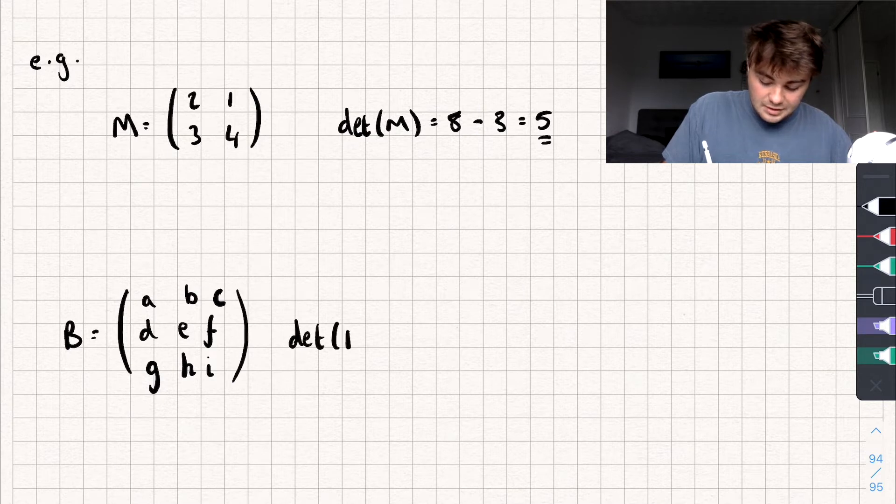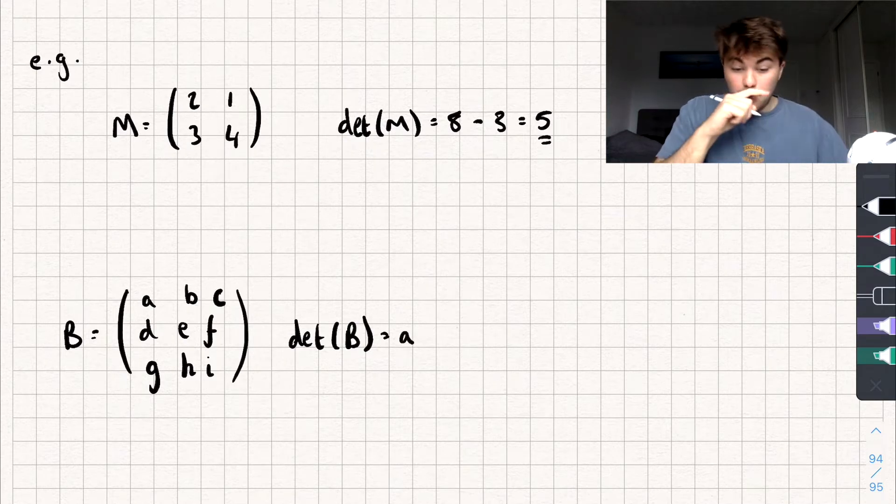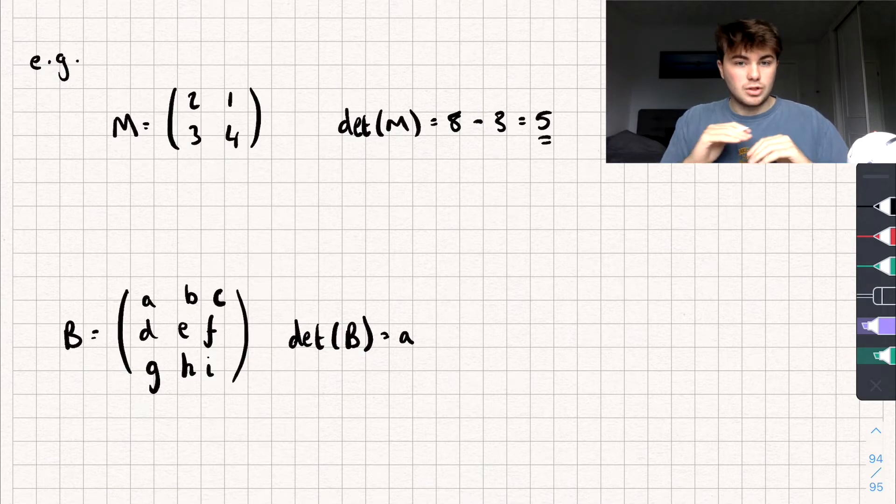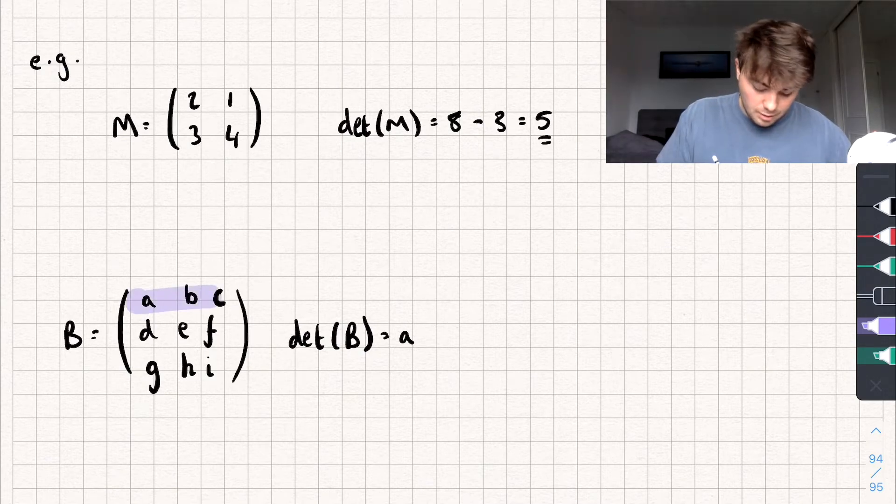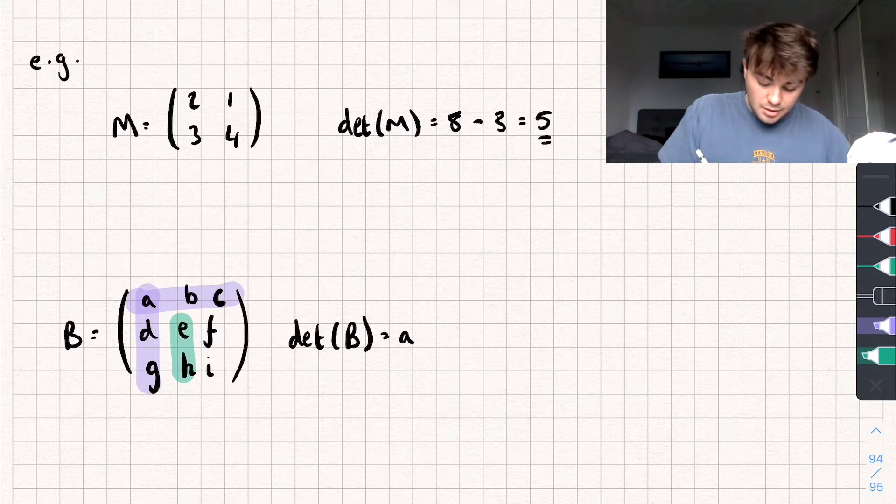Then the determinant, or the det of B, well the way we work it out is we take element a, so the top left element, and we multiply it by what we call the minor determinant of a. And we can find that by eliminating the rows and columns that element a is in. So for example, this row, this column, and you can see we're left with these four elements here.